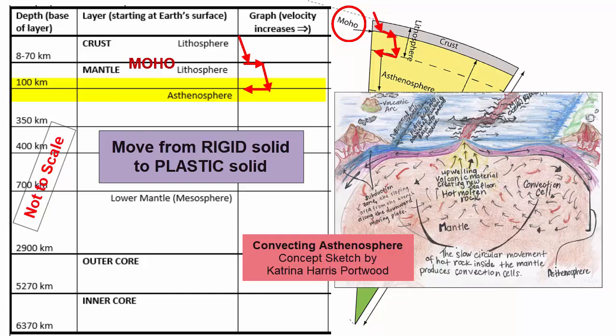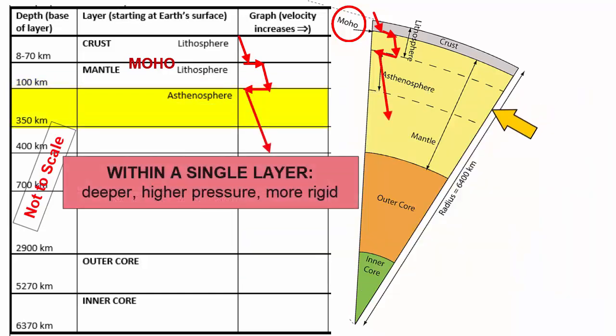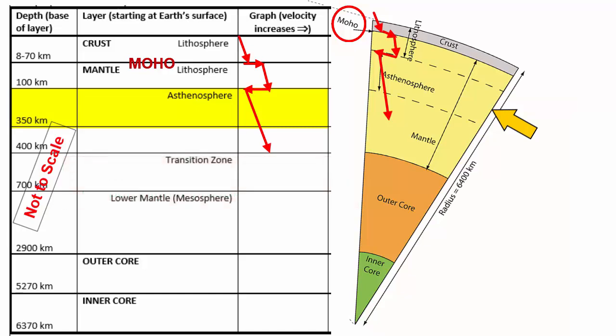We call this low velocity layer the asthenosphere, and over long periods of time it can flow and convect, and thus helps drive the breakup and movement of the overlying lithosphere or plates. As seismic waves continue to descend within the asthenosphere, the increasing pressure creates increasing rigidity, and there's a slow and steady increase in seismic wave velocity with the wavefront bending upwards.